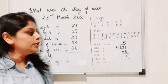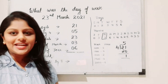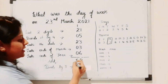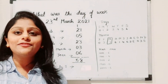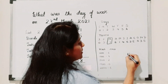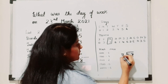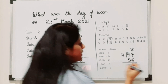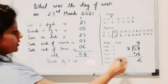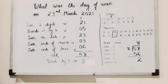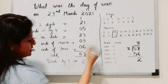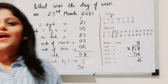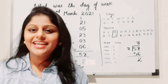Now add all together: 21 + 5 + 23 + 3 + 6 = 58. Divide 58 by 7; we take the remainder. 58 divided by 7 gives a remainder of 2. Code 2 corresponds to Tuesday. Therefore, 23rd March 2021 is Tuesday — and yes, today is Tuesday! I hope this trick is clear for everyone.